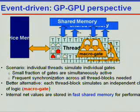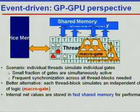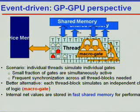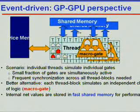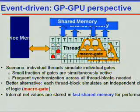From the GPU perspective, individual threads simulate individual gates. Only a small fraction of gates are simultaneously active, and frequent synchronization across all threads is needed. To get better granularity, we group each thread block's stimulus into a micro gate, which is an independent chunk of logic. The internal net values are stored in faster shared memory for performance — that is the benefit of micro gates.